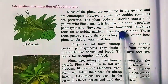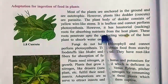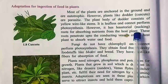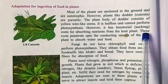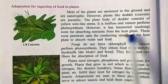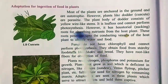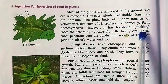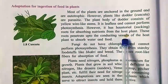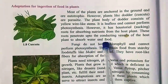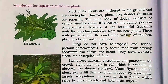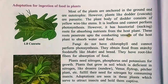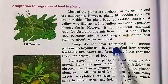Dodder has haustorial sucking roots for absorbing nutrients from the host plant. They grow on other plants and take out food from that plant with yellow wire-like stems. These roots penetrate up to the conducting vessels of the host plant to absorb water and food. The Cuscutta or dodder plant lives on other plants — it is parasitic and absorbs food with the help of its yellow wire-like stems.